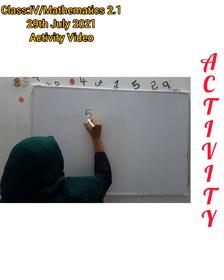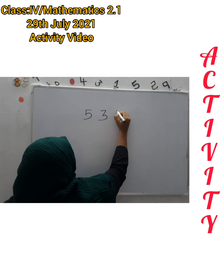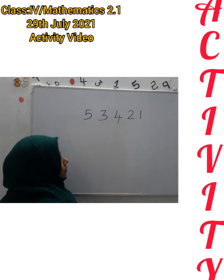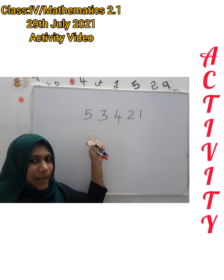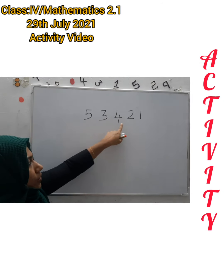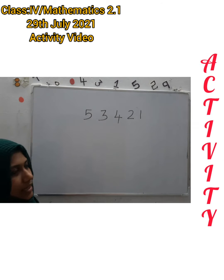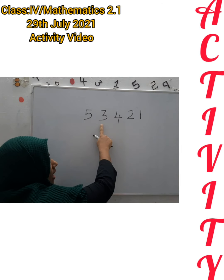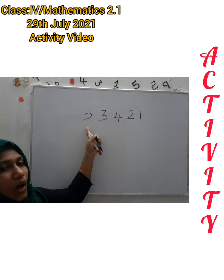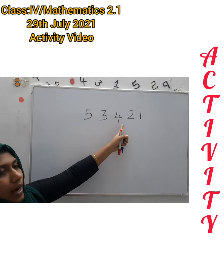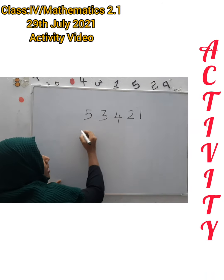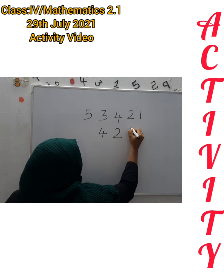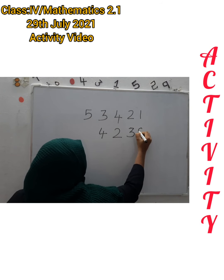For example, take the number 53,421 — it's a 5-digit number. We can read the places as 1's, 10's, 100's, 1000's, and 10,000's. So let's add 53,421 with 4,238.